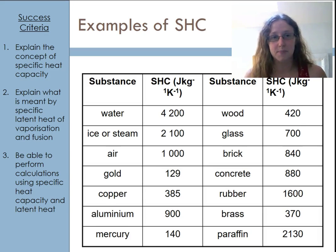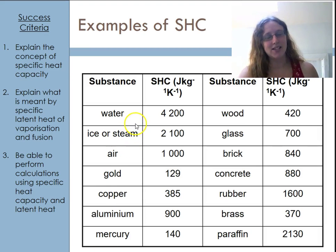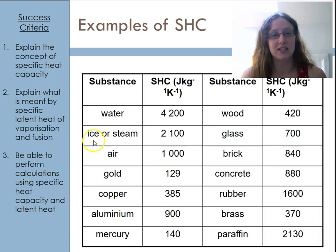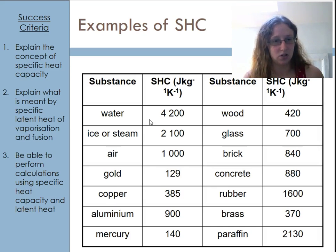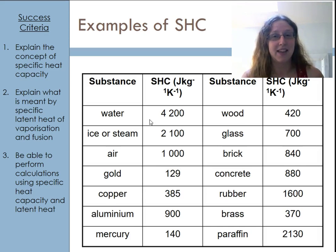Let's look at some examples of specific heat capacity values. There's a big range, and the first thing to notice is that the state of the substance matters — water has a different specific heat capacity to ice or steam, so you must use the correct value. Larger numbers tell you that it takes more energy to change the temperature of one kilogram of that substance. Looking at these values, it should leap out that water has an exceptionally high specific heat capacity.